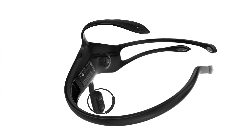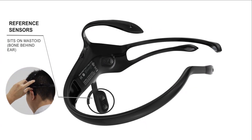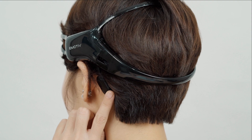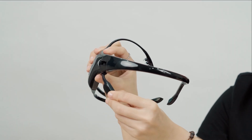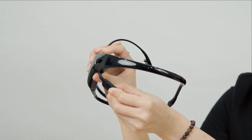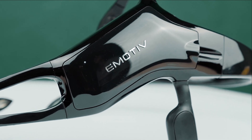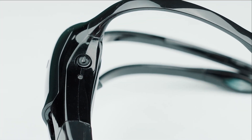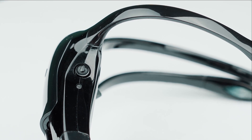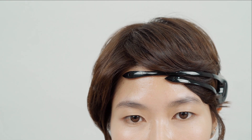Before fitting the headset, note the black reference sensor that is meant to sit on the bony part behind the ear. Bend it in slightly so that when it is on, it sits firmly against your skin. Orient yourself with your headset — the reference sensor and the main bulky part of the headset are on the left, with the two paired sensors sitting on the front of your forehead.